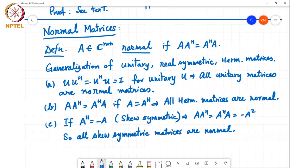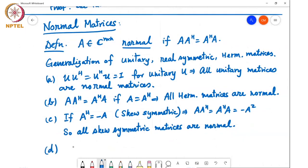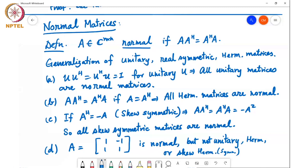And finally, just one more example, if I consider the matrix A equal to [1, -1; 1, 1], this matrix is normal, but it is not unitary, or Hermitian, or skew Hermitian, or skew symmetric. So, basically, the definition of normal matrices is a strict generalization of these other matrices like unitary matrices, or real symmetric matrices, or Hermitian matrices, or skew Hermitian matrices.